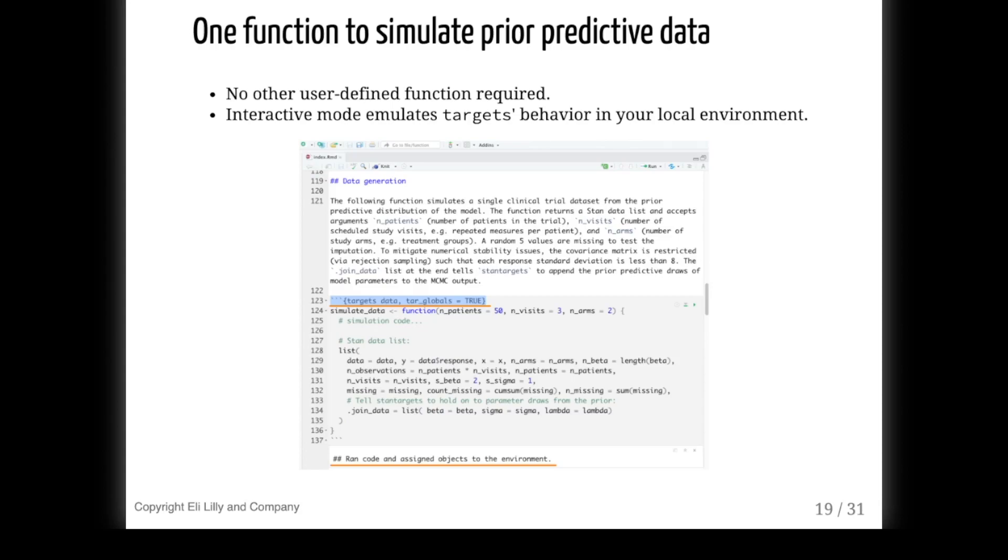So we're inside an R Markdown report, and to study the calibration of our Bayesian model for clinical trial data, we want to define a function to simulate data from the prior predictive distribution. Thanks to stan targets, this is the only user-defined function that the pipeline needs to write by hand. To make this function and other global objects and options and settings available to the pipeline, we use the targets language engine instead of the R language engine, and we set the tar_globals chunk option equal to true. If you're in the notebook interface and working interactively, you can click the green play button here on the right, and target markdown will just run the code and assign it to the environment of the pipeline. You can do this if you want to test and prototype the function locally, and if you have multiple objects and functions, you can divide them up however you want among multiple globals code chunks like this one.